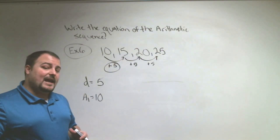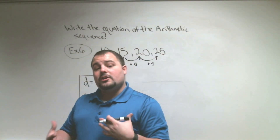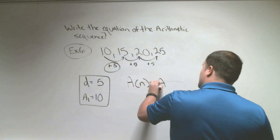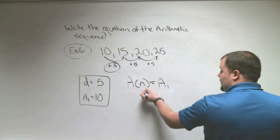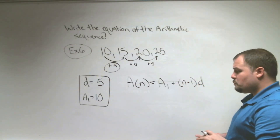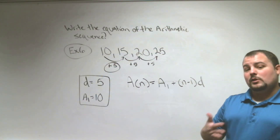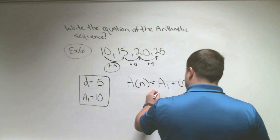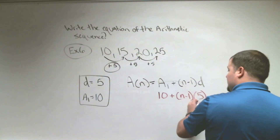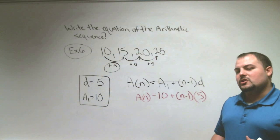Having those two pieces of information, our equation is: A of any number equals A1 plus (N minus 1) times D. All we're going to do is replace the things we know. We're given A1, so this is 10, plus (N minus 1), and our D is 5, so times 5. Just by doing this, we've already written the equation of an arithmetic sequence.